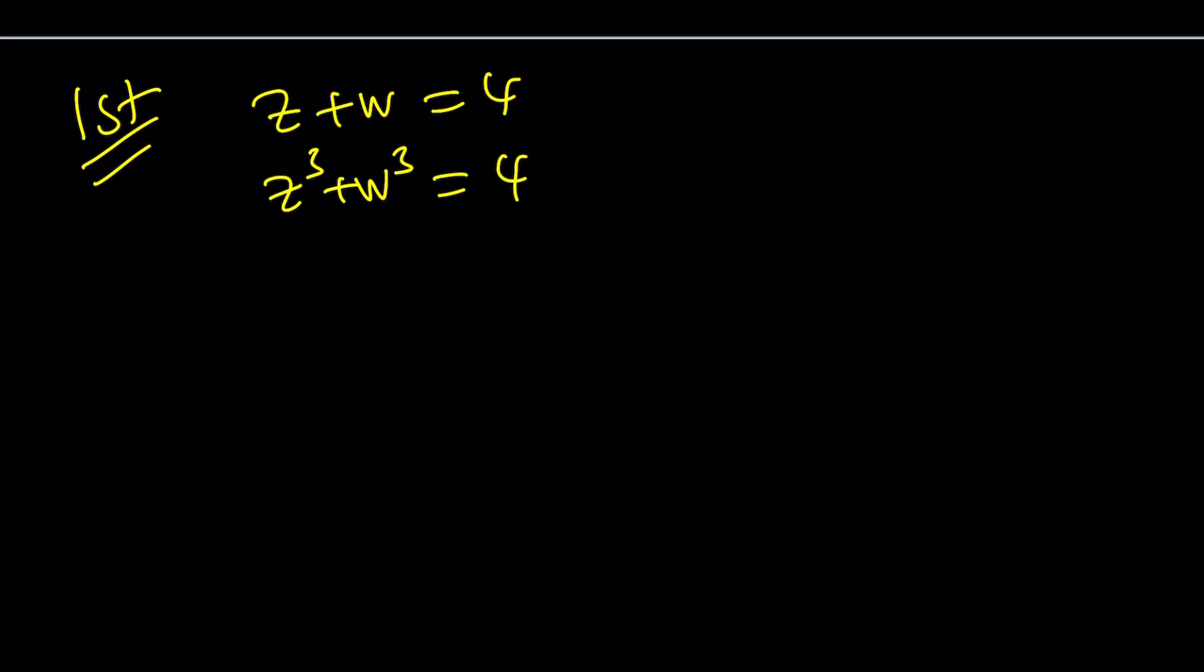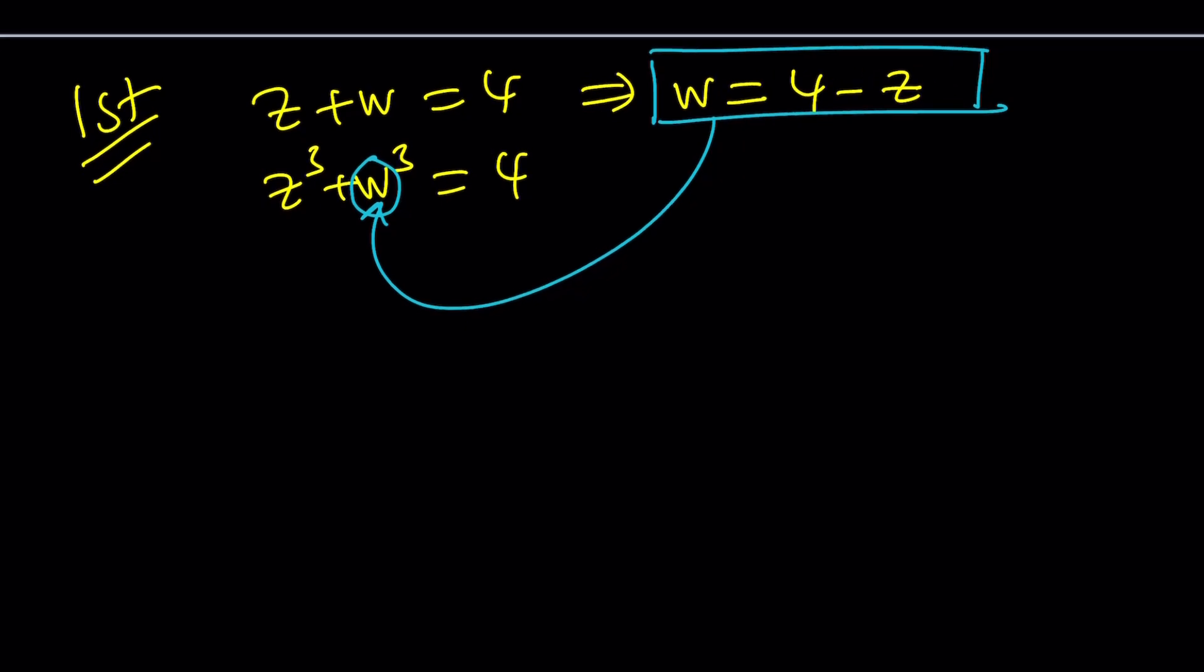Since we have a linear equation, let's go ahead and take advantage of that and isolate w from the first equation, and write it as 4 minus z. And then substitute it into the first equation. So I'm using substitution for this system. I'm going to go ahead and replace this w with 4 minus z, and interesting things will happen.